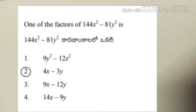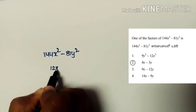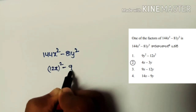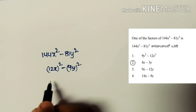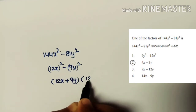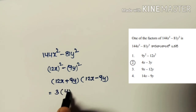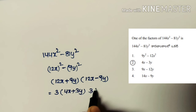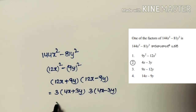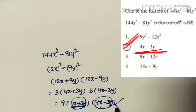Next problem: one of the factors of 144x² − 81y² is? This is 144x² − 81y² = (12x)² − (9y)², which is in the form a² − b² = (a + b)(a − b). So it factors as (12x + 9y)(12x − 9y) = 3(4x + 3y) × 3(4x − 3y) = 9(4x + 3y)(4x − 3y). Since 4x + 3y is not in the options, 4x − 3y is the correct answer, which is the second option.